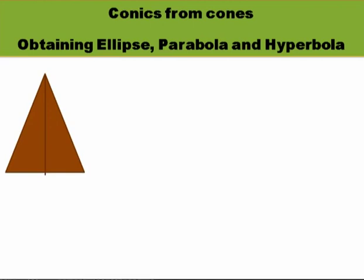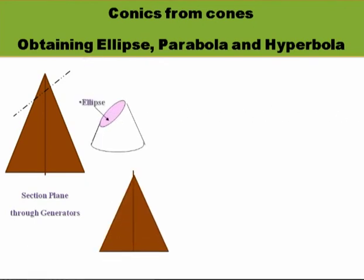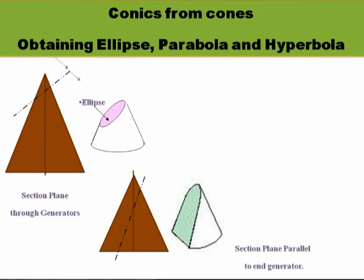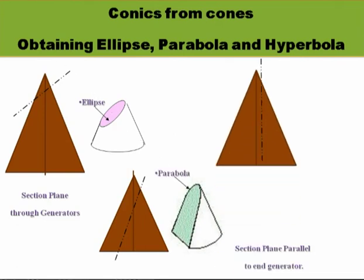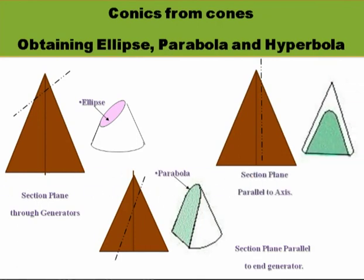How are you obtaining the conics? That you have already learned; we are revising. If the cutting plane is inclined to the axis and also cuts the generator, the section you will get is an ellipse. If the cutting plane is inclined to the axis but parallel to the generator, the section you will get is the parabolic curve. If the cutting plane is parallel to the axis, the section you get is a hyperbola.